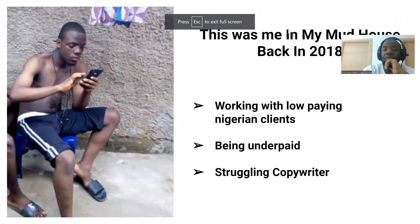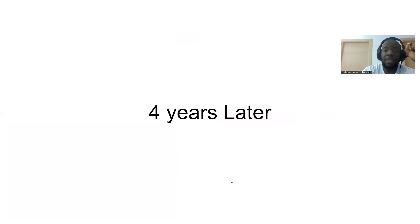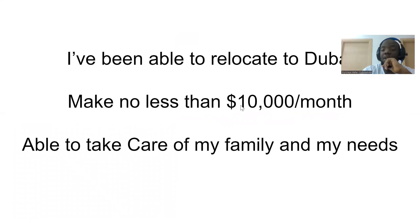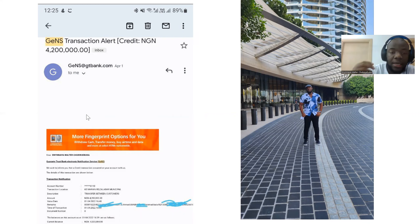This was me back in 2018 — outside that mud house. I was working with low-paying clients, just starting freelancing, using my Infinix Hot 5 with a broken screen, being underpaid as a struggling copywriter. Four years later, I've relocated to Dubai and make no less than $10,000 every month. Here's a credit transaction from a gig I did earlier this year — in April I received a payment of 4.2 million naira.